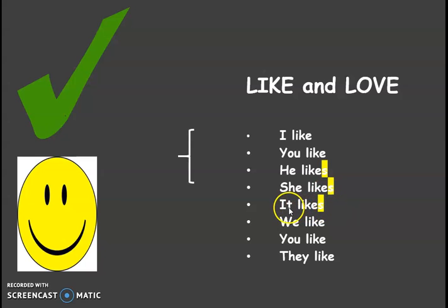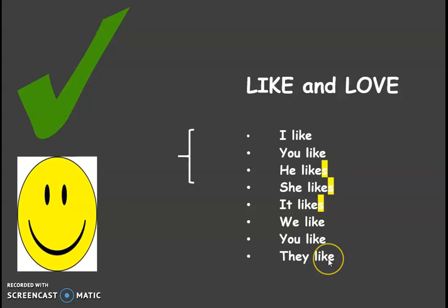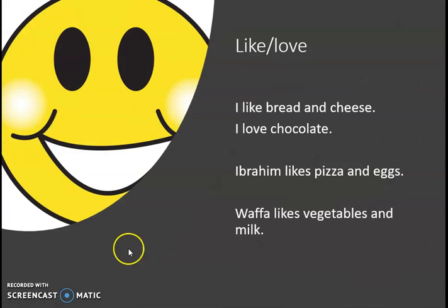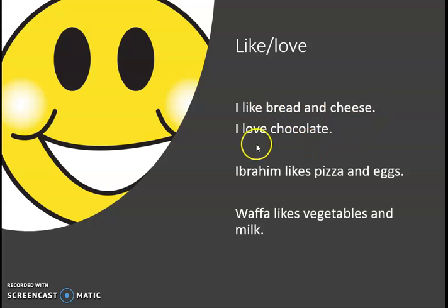It could be a cat or a dog. We like cake. You like tea. And they like cheese. For example, I like bread and cheese, and I love chocolate.